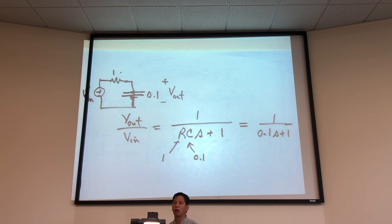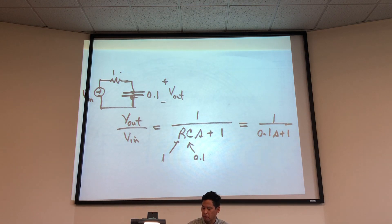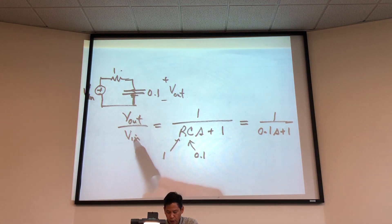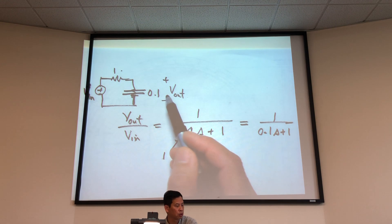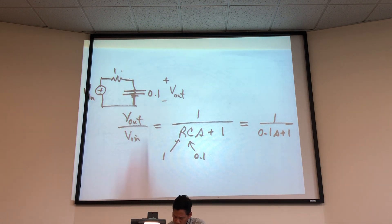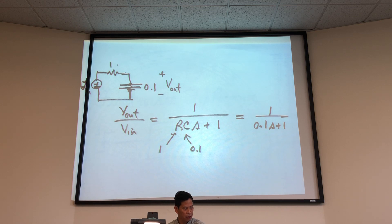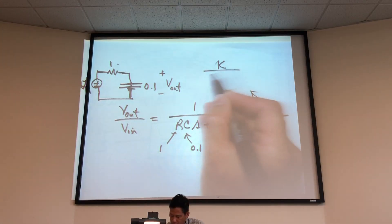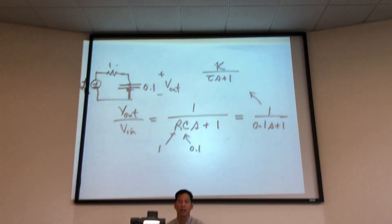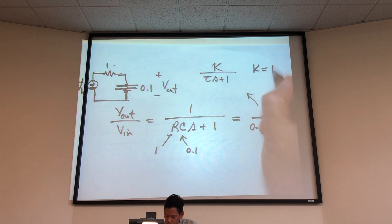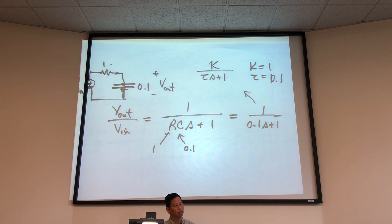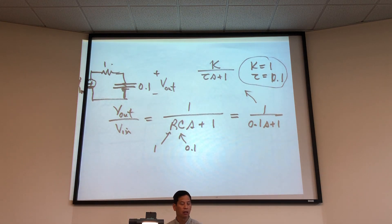This would be an example of a simple first-order electrical process in that standard form. Remember, transfer function describes output over input. The output is the voltage across the capacitor; the input is the voltage source. Fitting it to my standard form K over (τS plus 1), comparing side by side, I conclude that K is equal to 1 and τ is equal to 0.1. A first-order system is characterized by these two parameters, K and τ.